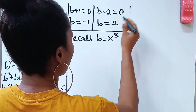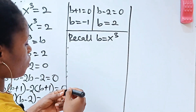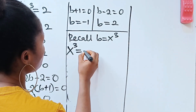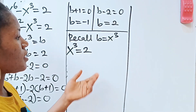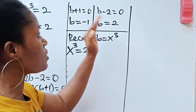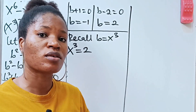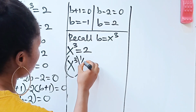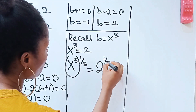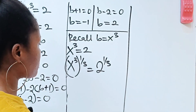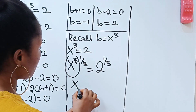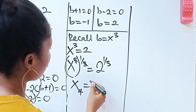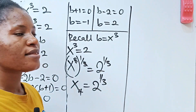For b equals 2, recall that b equals x to the power of 3, so x to the power of 3 equals 2. To solve for x, we raise both sides to the power of 1 over 3. The 3s cancel on the left, giving us x equals 2 to the power of 1 over 3 as our second real value.